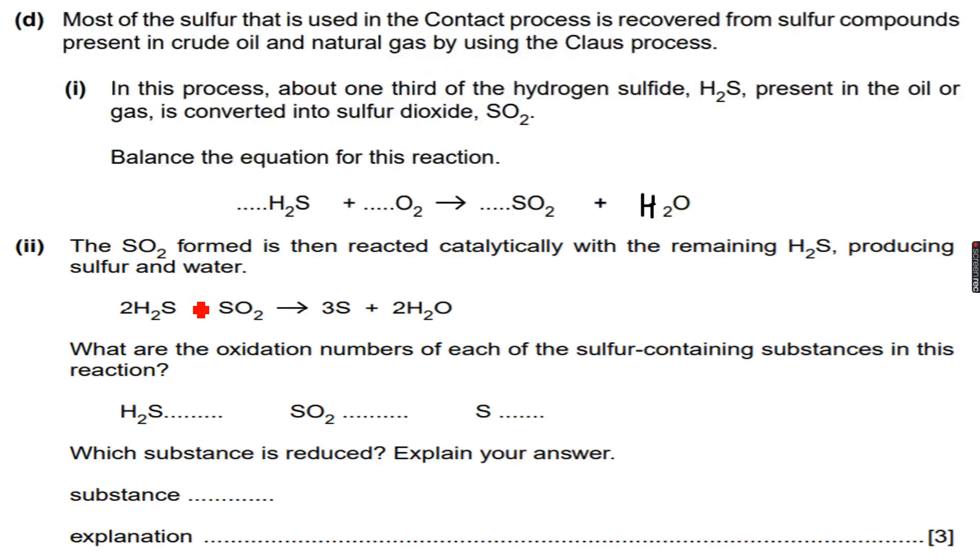Let's move forward now. Let's do a quick exercise. Most of the sulfur that is used in the contact process, the contact process is when sulfur is used to form sulfuric acid, is recovered from sulfur compounds present in crude oil and natural gas by using the Claus process.